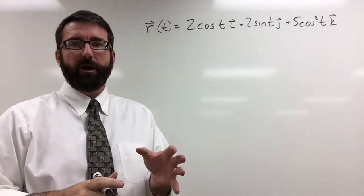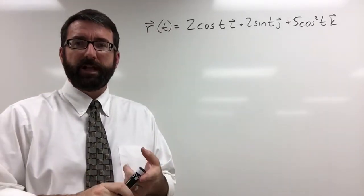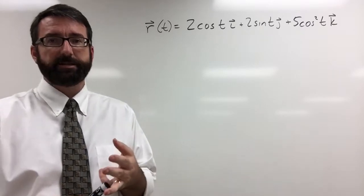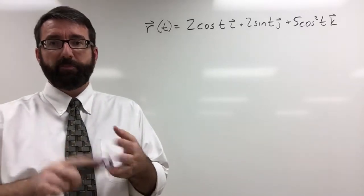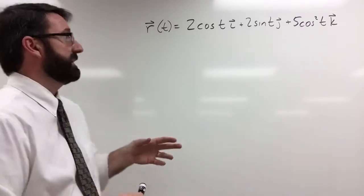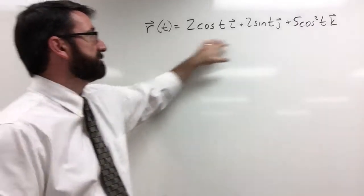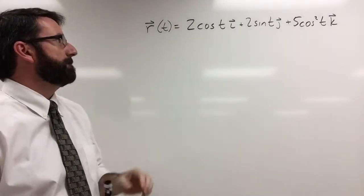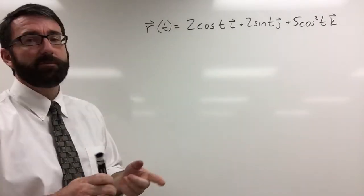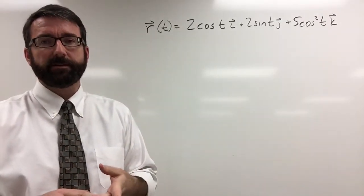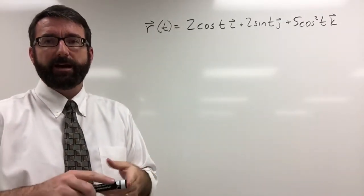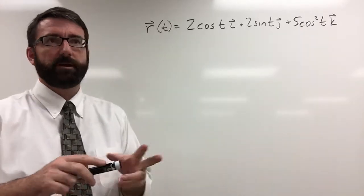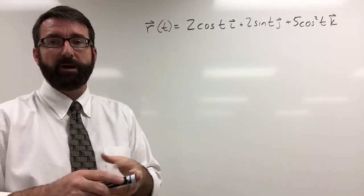For this example, we are asked to find the velocity, speed, and acceleration of a particle whose motion in space is given by this position vector. And then we're asked to find the velocity vector at time equals 7π/4.